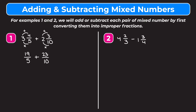Remember when we add or subtract fractions we need to first make sure that we have a common denominator, and we're going to do that by finding the least common multiple of the two given denominators. The least common multiple of 5 and 10 is 10, so we want both of our fractions to have a denominator of 10. Our second fraction already has a denominator of 10 so we're going to keep it as it is. For the first fraction, we think how did we get from 5 to 10? We multiplied by 2. Anything we multiply the denominator by, we have to multiply the numerator by to keep it an equivalent fraction.